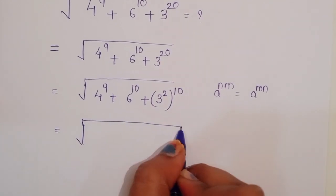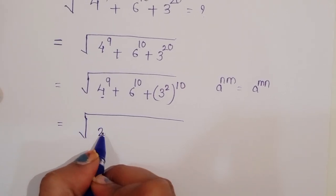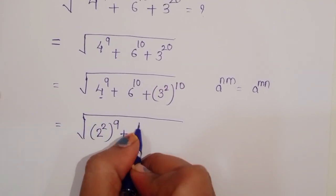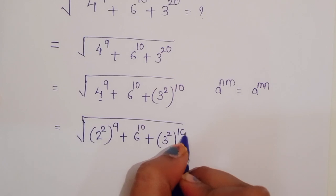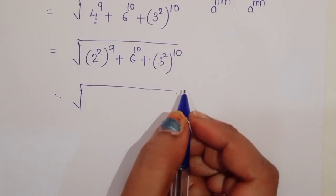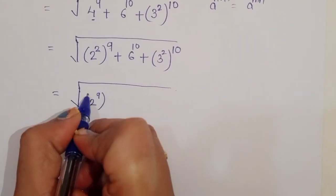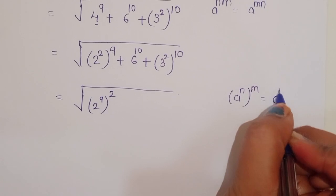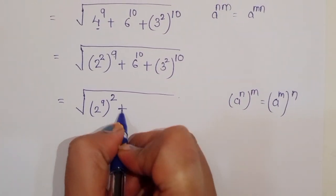For 4 power 9, we can write 4 as 2 power 2, giving us 2 power 2 power 9 plus 6 power 10 plus 3 power 2 power 10. Now, using the formula a power n power m equals a power m power n, we rewrite this as 2 power 9 power 2 plus 6 power 10.